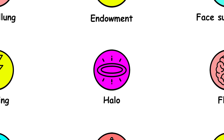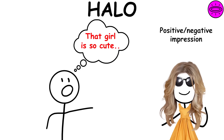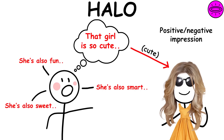Halo effect. This effect occurs when a positive or negative impression of one characteristic of a person affects the evaluation of other characteristics of that person.